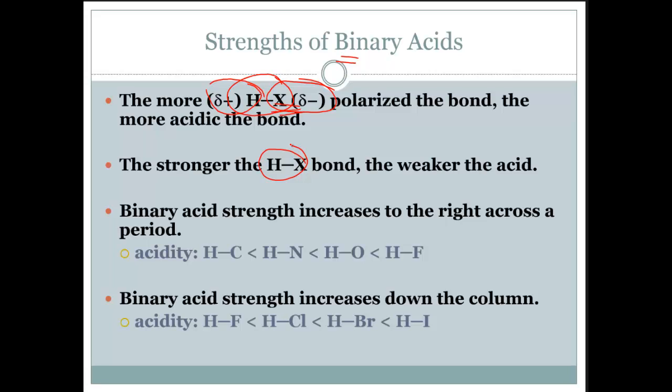Binary acid strength increases to the right across the period. So carbon, nitrogen, oxygen, and fluorine are all increasing in electronegativities.